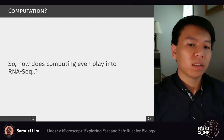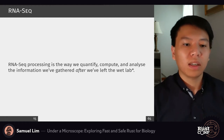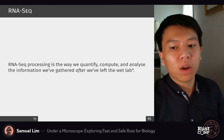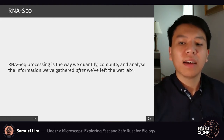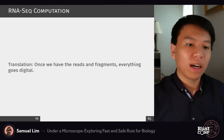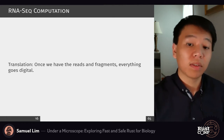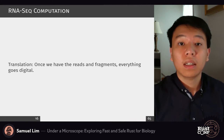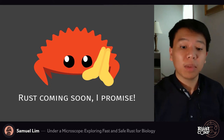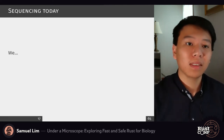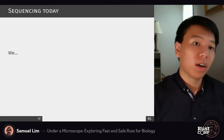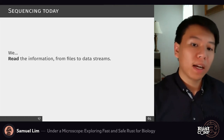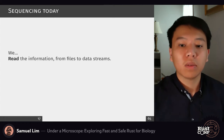But how does that relate to computing? It comes to computing where we need to process the information we've gathered. RNA-seq processing is how we can quantify, compute, and analyze the data we've taken after leaving the wet lab — after isolating different samples, reads, and fragments. Everything from our information to the inferences we want to gather can go digital. We read the information from files and experimental samples and turn them into data streams that we can manipulate.